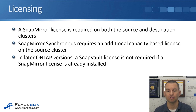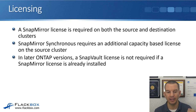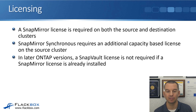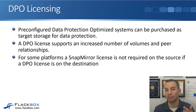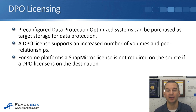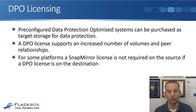For licensing, a SnapMirror license is required on both the source and destination clusters for DP mirrors and SnapVault. SnapMirror Synchronous requires an additional capacity-based license on the source cluster. In earlier ONTAP versions, you needed separate SnapMirror and SnapVault licenses, but in later versions a SnapVault license is not required if a SnapMirror license is already installed. A special system type from NetApp is DPO — Data Protection Optimized — which supports an increased number of volumes and peer relationships. For some platforms, a SnapMirror license is not required on the source if a DPO license is on the destination, making it cost-effective for centralized SnapMirror and SnapVault destination clusters.